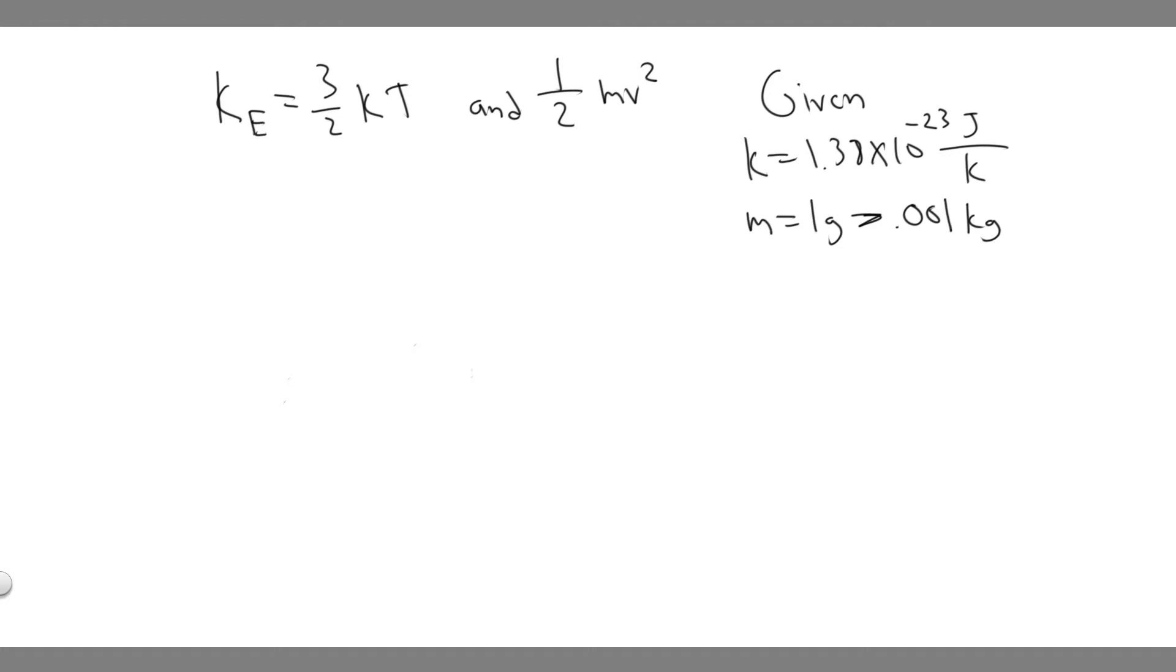So in this problem, we're going to be dealing with kinetic energy. We're dealing with the kinetic energy of an object, and the formula for that is 1/2 mv squared. And then there's another formula for the average translational kinetic energy for a molecule. In this case, it's 3/2 kt.